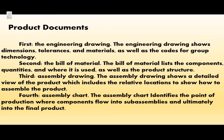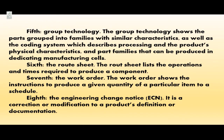Third, the assembly drawing shows a detailed view of the product, including the relative locations to show how to assemble the product. Fourth, the assembly chart identifies the point of production where components flow into sub-assemblies and ultimately into the final product. Fifth, group technology shows parts grouped into families with similar characteristics, as well as the coding system which describes processing and the product's physical characteristics, and part families that can be produced in dedicated manufacturing cells.